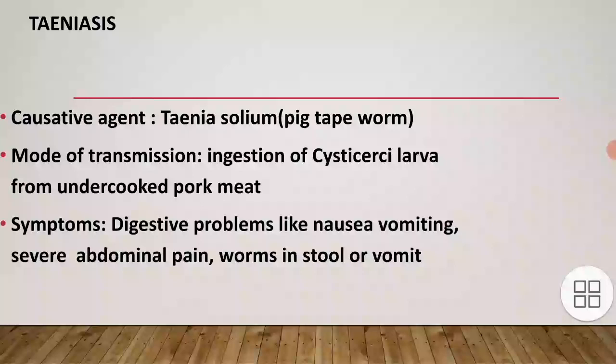The last one is taeniasis, whose causative agent is Taenia solium, also known as pig tapeworm. Mode of transmission is ingestion of cysticercus larvae from undercooked pork meat. Symptoms include digestive problems such as nausea, vomiting, severe abdominal pain, and worms in the stool.